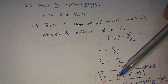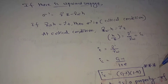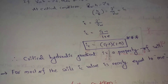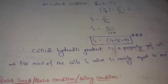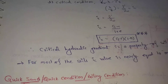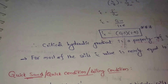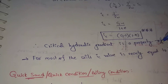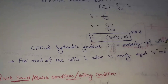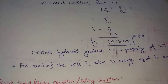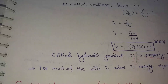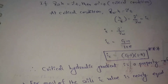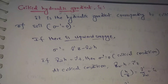Critical hydraulic gradient is a property of the soil. For most soils, the Ic value is nearly equal to 1. So for all soils, Ic is approximately 1. This is the critical hydraulic gradient.